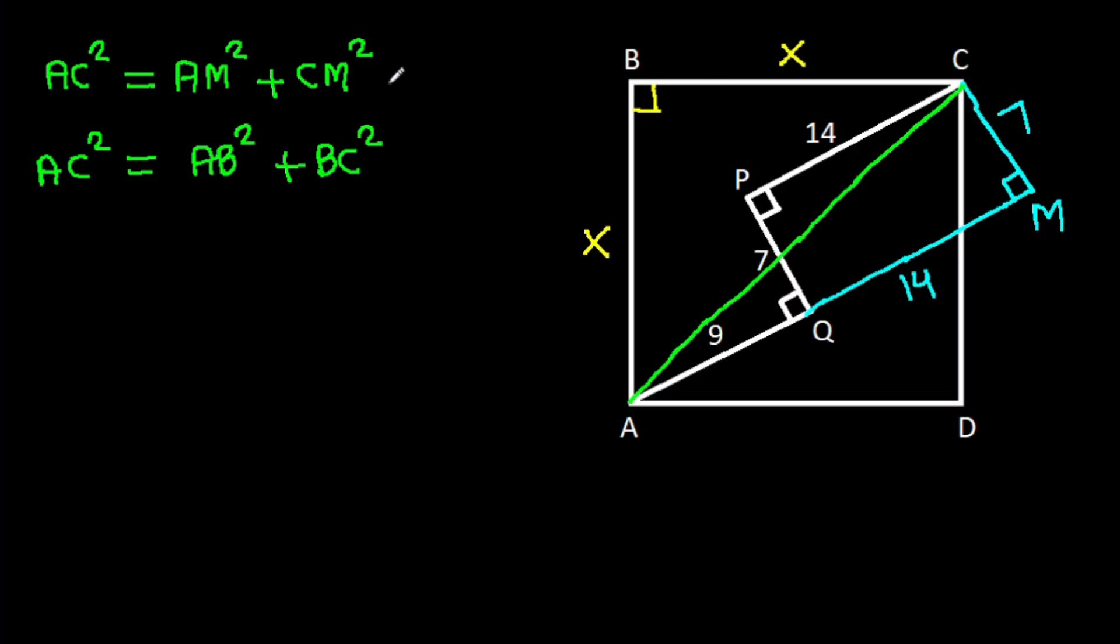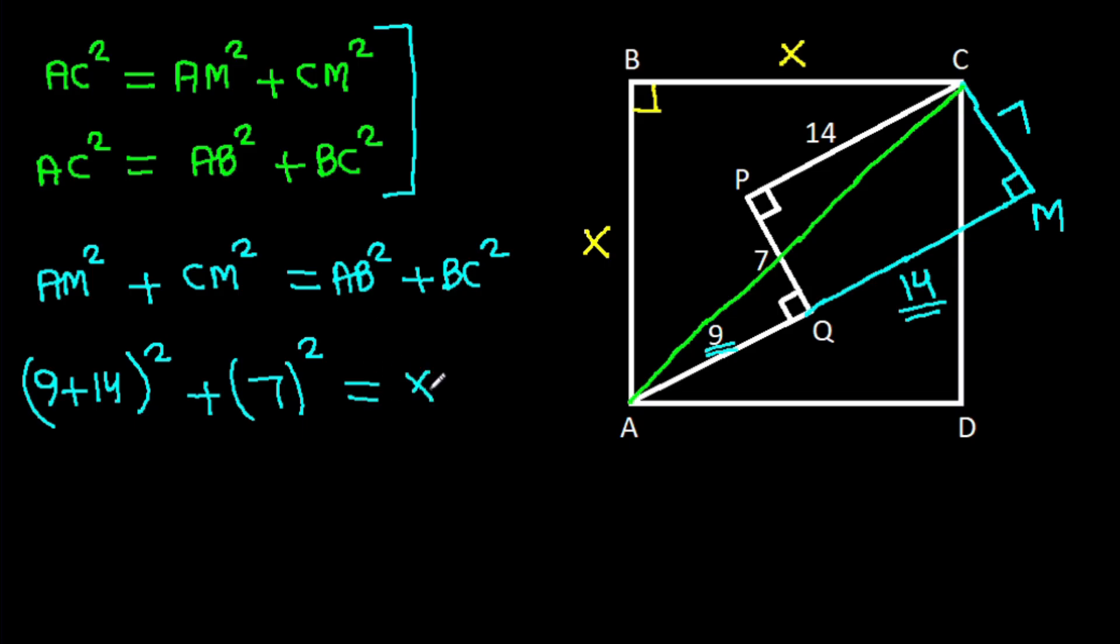So from these two equations, we can say that AM squared plus CM squared equals AB squared plus BC squared. Since AM is 9 plus 14, which is 23, and CM is 7, we have 23 squared plus 7 squared equals 2 times X squared.